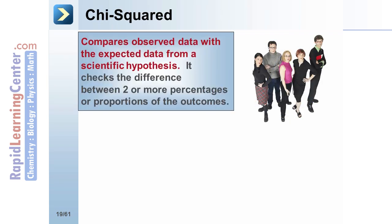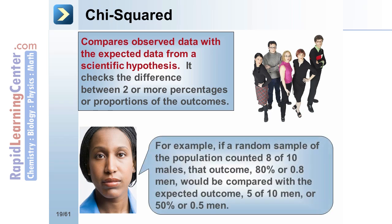The chi-squared test is used most commonly to compare observed data with the expected data from a scientific hypothesis. It checks the difference between two or more percentages or proportions of the outcomes. For example, if a random sample of the population counted 8 of 10 males, that outcome, which is 80% or 0.8 men, would be compared with the expected outcome of 5 of 10 people being men, or 50% or 0.5.